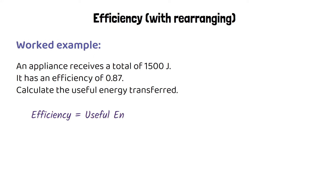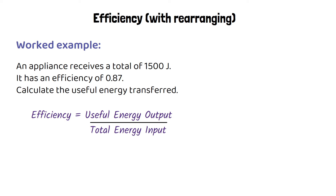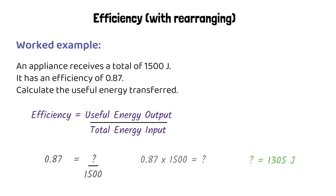We use the same equation: efficiency equals useful output over total input, substituting known values. We know efficiency is 0.87 and total energy input is 1500. Rearranging, 1500 moves to the other side giving us 0.87 times 1500, which equals 1305 joules of useful energy output.